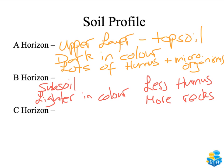The C horizon is the parent rock — the underlying rock. It is made up of the bedrock and pieces of rock.